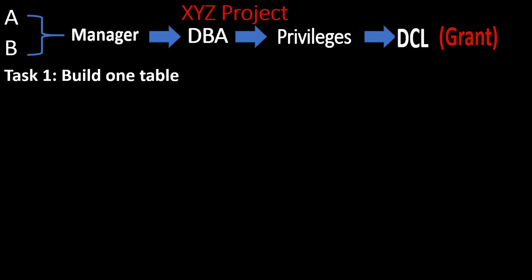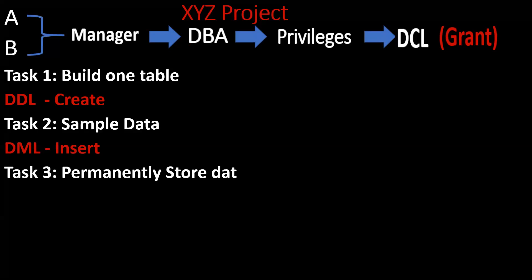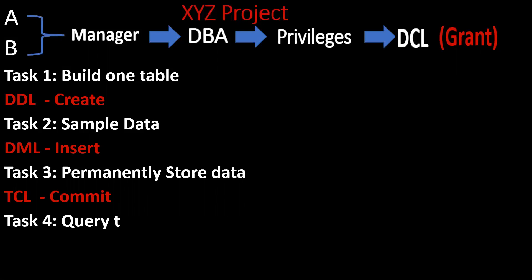Then the manager gives some tasks to perform. The first task is to build one table — by using DDL commands, we can do that. The second task is to insert some sample data — that is DML command. To store the data permanently, we use TCL, transaction control language — that is commit. The next task is to query the data — that is DRL, data retrieval language. By using the select command, we can retrieve the data.